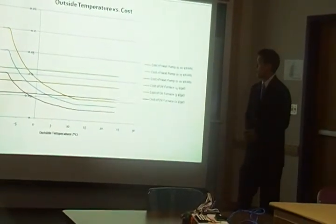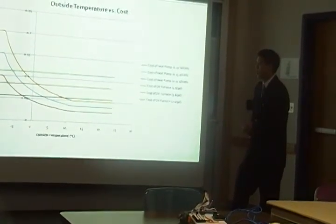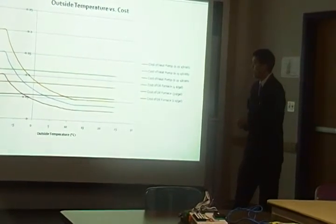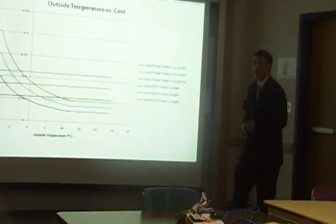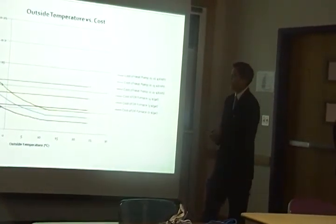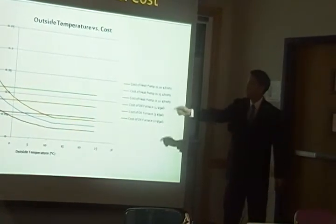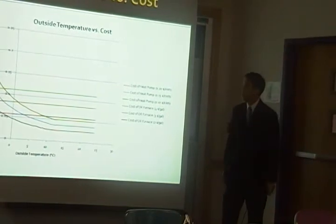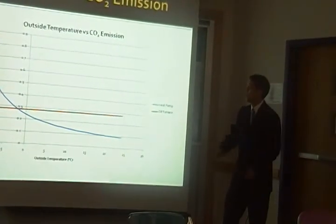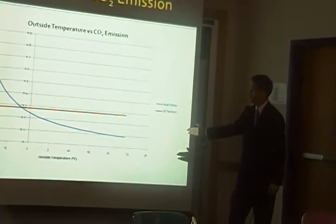This graph shows outside temperature versus cost, where each line represents the heating system cost at different prices and the intersections are the switching points. For example, the yellow line at $0.20 per kilowatt-hour and the horizontal green line representing oil at $4 per gallon intersect at around negative 3 degrees Celsius — any temperature below that, the oil furnace is more cost-efficient. For the carbon dioxide mode, we found a switching point of about negative 2 degrees Celsius, which varies by region. The heat pump cost is dependent on outside temperature, while the oil furnace cost is constant.